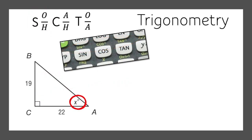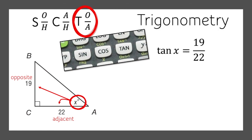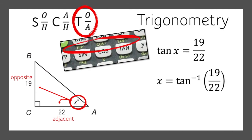We're missing x, but we do know the opposite side and the adjacent side — so opposite and adjacent is tangent. We know the tangent of x is 19 over 22. Using the inverse button, tangent inverse of 19 over 22 gives us the measure of x as 40.82 degrees.